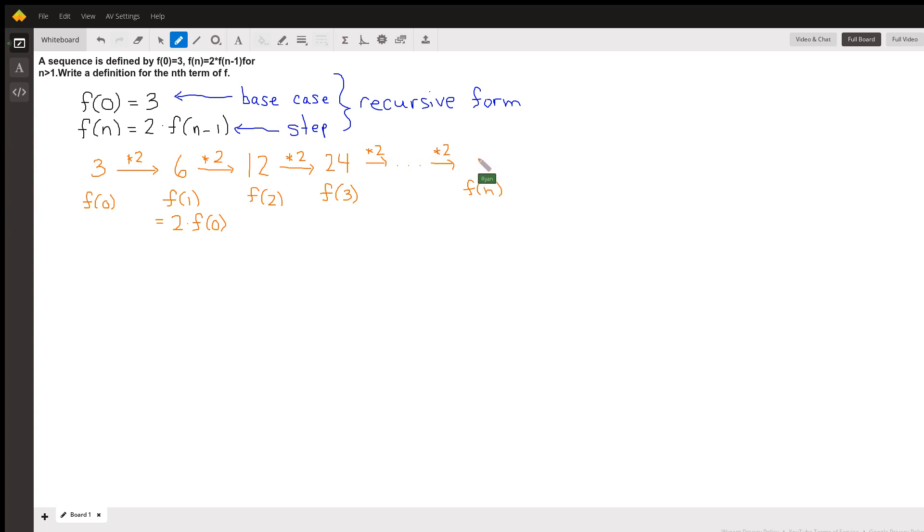So that by the time we get to f(n), we started with 3, we've multiplied by 2, multiplied by 2, multiplied by 2 each time to get to the next term of the sequence. So we have 3 times 2 times 2 times 2, which is 2 to the power of something.